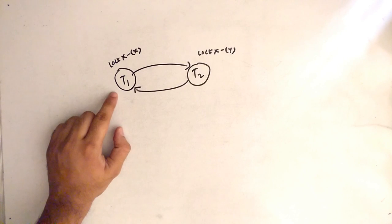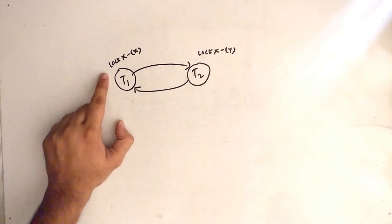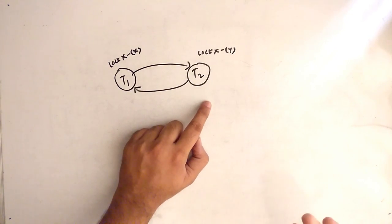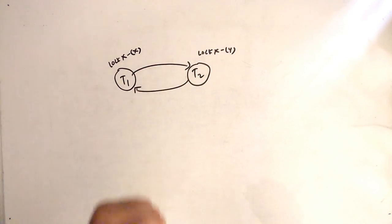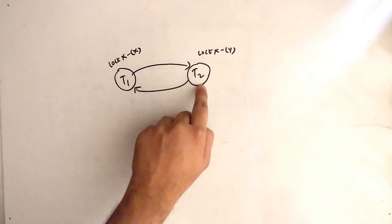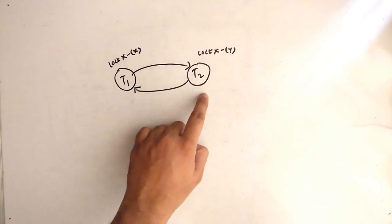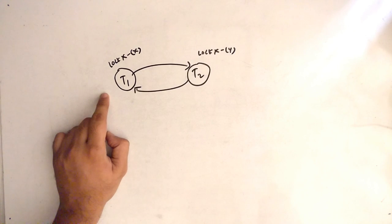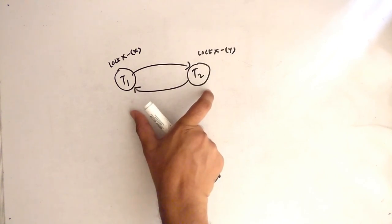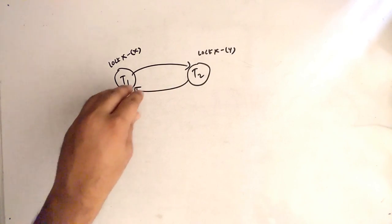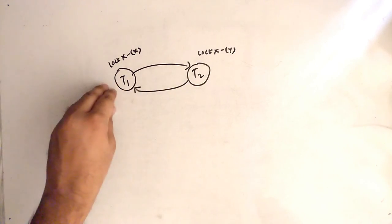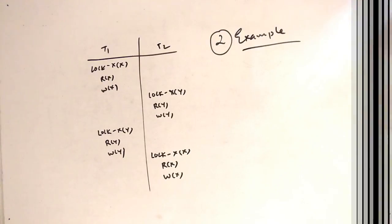Transaction T1 has a lock on resource X, and transaction T2 has a lock on resource Y. Now transaction T1 is waiting for transaction T2 to release resource Y, so that T1 can acquire it. Similarly, T2 is waiting for T1 to release resource X. So T1 is waiting for T2, and T2 is waiting for T1 — this is the deadlock situation. The definition says: a system is in deadlock if there exists a set of transactions such that every transaction in the set is waiting for another transaction to complete its execution.